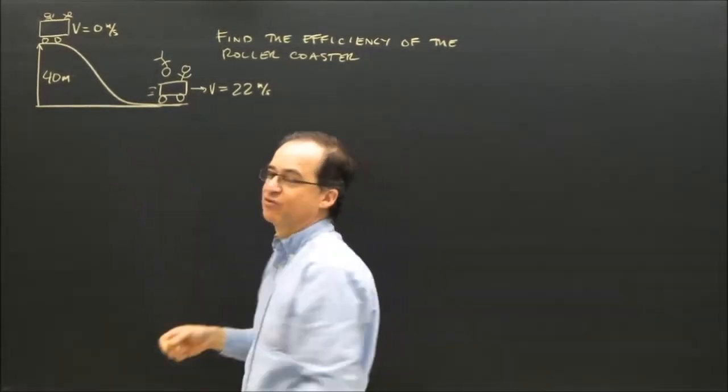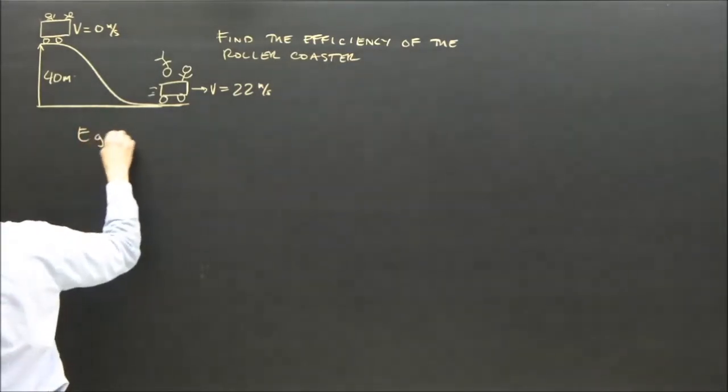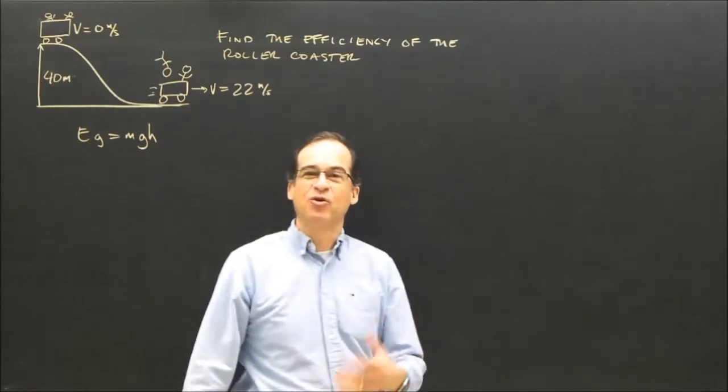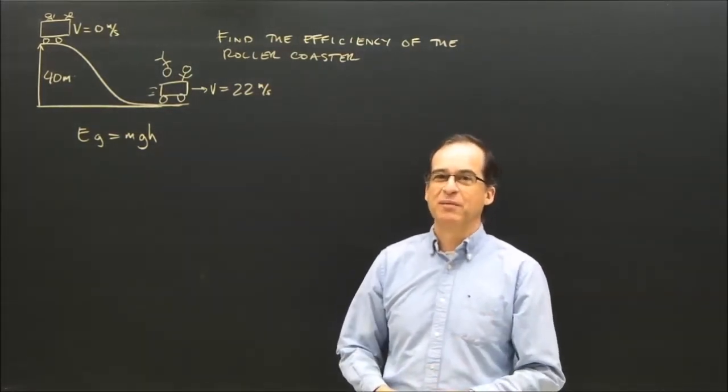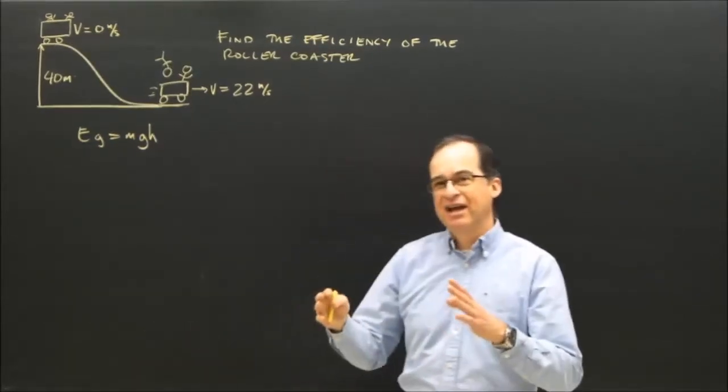I'm going to figure out the gravitational energy at the top. Eg is mgh. I notice right away that I don't have the mass of the roller coaster, but frequently in these kinds of problems we don't have the mass. Don't let that throw you off. All you've got to do is keep m as an unknown.